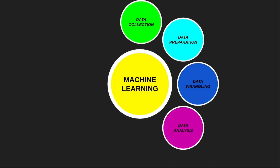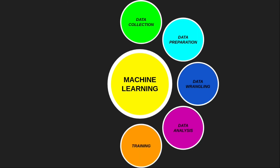The fifth step of the machine learning development life cycle is training the model. In this step, we train the model to improve its performance for a better outcome. We use datasets to train the models in various machine learning techniques. We pick the better-performing technique from the data analysis step and train on the complete dataset. We also work on tuning the hyperparameters for a better outcome, so the model can understand various patterns hidden in the data and make decisions and predictions.